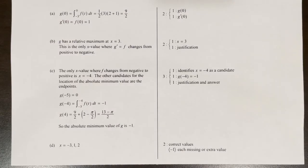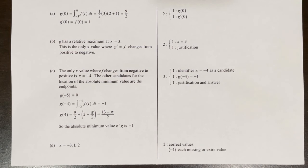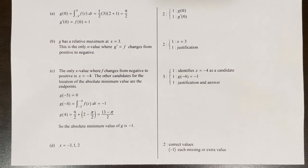If asked to justify: g has points of inflection at x equals negative 3, x equals 1, and x equals 2, because g prime, which equals f, changes from increasing to decreasing or vice versa at these points. Here is the rubric from the College Board for this question.